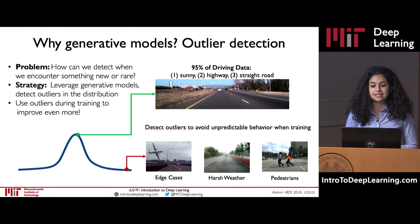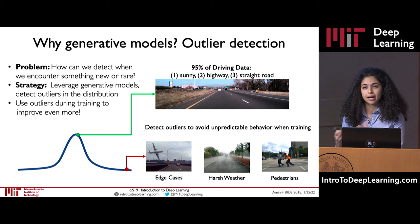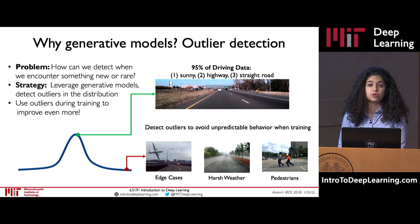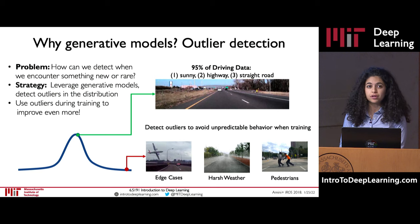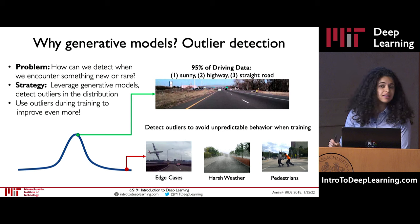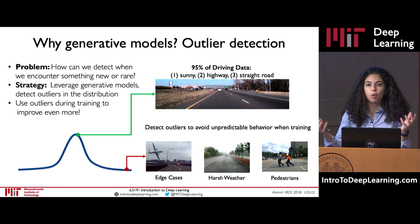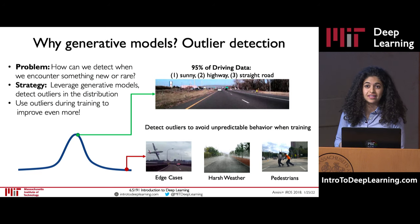Another great example is outlier detection. For example, in the context of autonomous driving, you want to detect rare events that may not be well represented in the data but are very important for your model to handle when deployed. Generative models can estimate these probability distributions and identify outlier instances — for example, when a pedestrian walks in or there's a strange event like a deer walking onto the road — and effectively handle these outliers in the data.